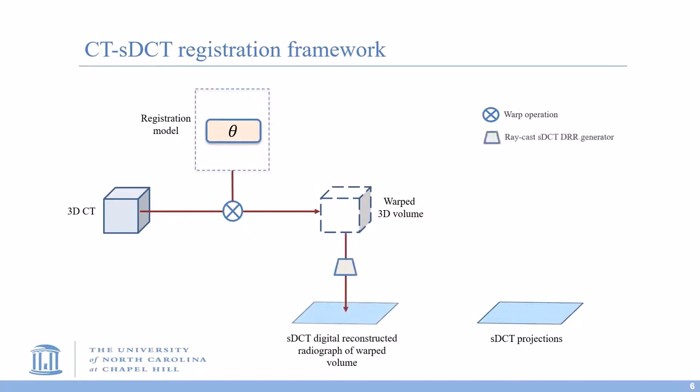Since we want the similarity measure to compute in projection space, we need an sDCT digital reconstructed radiograph generator to compute the sDCT DRR of the warped volume. Then we can compute the similarity measure in the sDCT projection space. After this step, we will backpropagate the loss to the parameter of the chosen registration model.